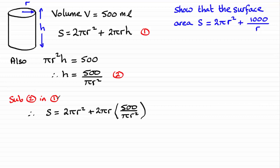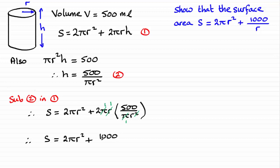You'll notice now that we can do a bit of cancelling. The π cancels with this π here, and I can take out one of the r's from the r squared, leaving just r. Tidying this up, we then have s equals 2πr² plus 1000 over r. And that's what we had to show.